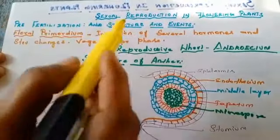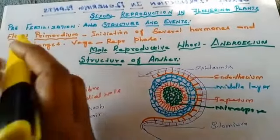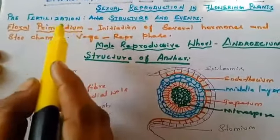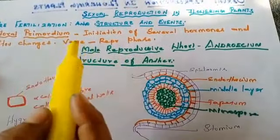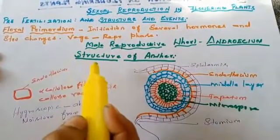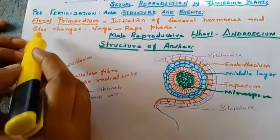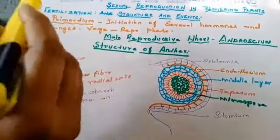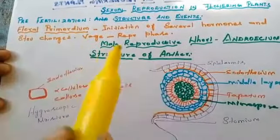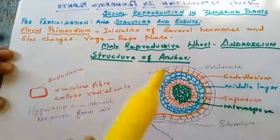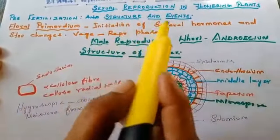Let us see the three phases in sexual reproduction in flowering plants. The first one is pre-fertilization. In pre-fertilization we will see the structure and events. After the vegetative phase — that is, the juvenile phase in plants is known as the vegetative phase — due to the initiation of several hormones and structural changes, floral primordium is formed. When the floral primordium is formed, the plant shifts from the vegetative phase to the reproductive phase.